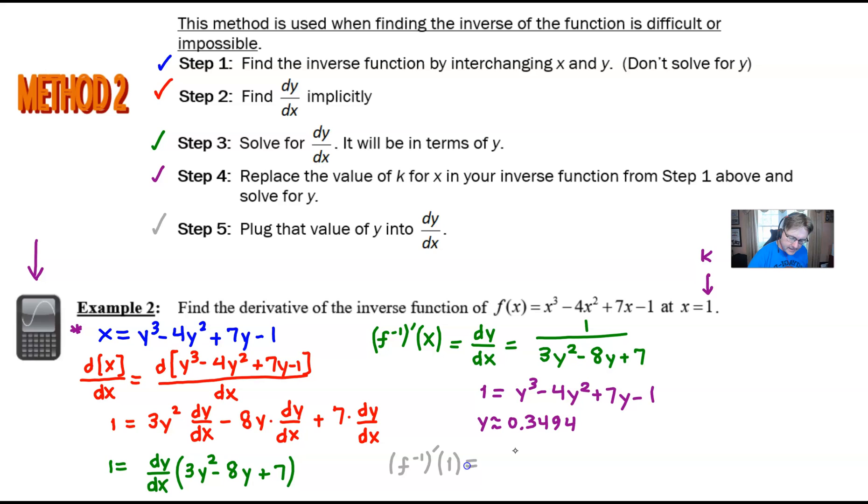So from a notation standpoint it's going to look a little something like this: the derivative of the inverse evaluated when x is 1 is going to give us 1 over, and we would just take this expression 3 times that y, well instead of using y we're going to plug in 0.3494 and of course we'll square him and then we subtract 8 multiplied by 0.3494 and we finish up with plus our 7. Extend this fraction and you know the OCD in me I've got to center that one. So we're going to go ahead and use our calculator and evaluate this to finish off this answer.